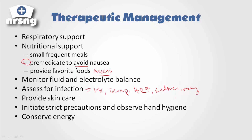We're going to provide frequent skin care. The patient will experience skin breakdown as they develop these imbalances, especially with wasting syndrome, when they no longer have the fat and tissue needed to protect their skin. We want to initiate strict precautions and observe hand hygiene. We don't want to bring any infections to this patient — since this is an autoimmune disease, the patient can be very susceptible, so we must protect them from staff and other patients.